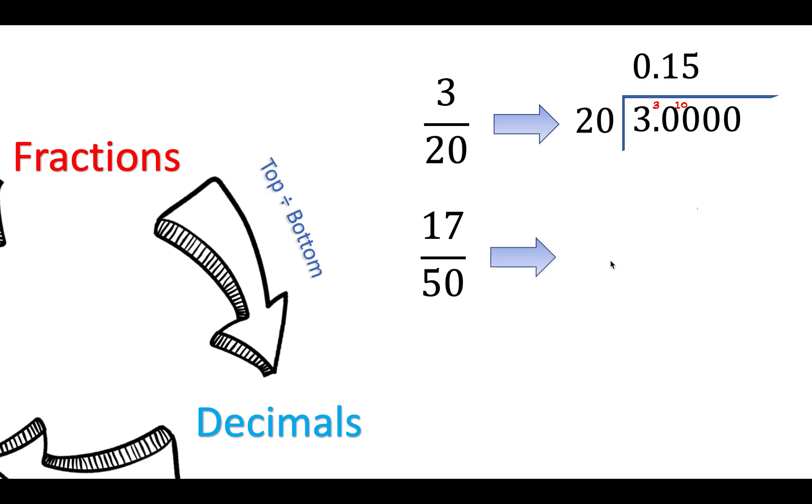Let's see that again. Let's do seventeen divided by fifty, like this. Now, how many fifties go into one? Zero. How many fifties go into seventeen? Zero.